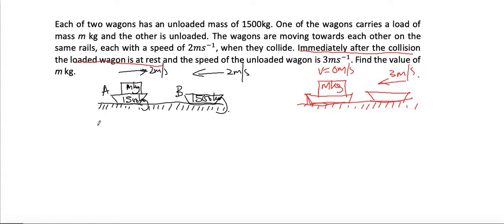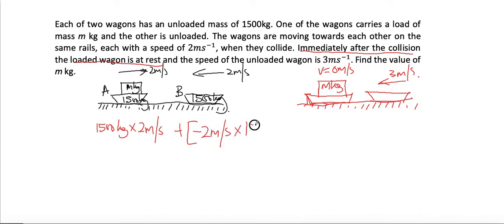Now applying conservation of momentum: 1500 kg multiplied by two meters per second, plus — that's towards the left so it should be negative — negative two meters per second multiplied by 1500. The total momentum before the collision equals the total momentum after the collision, which equals m plus...